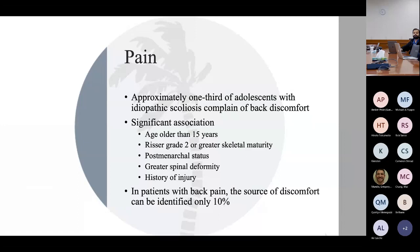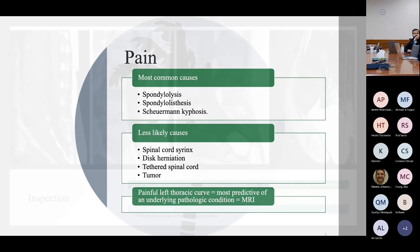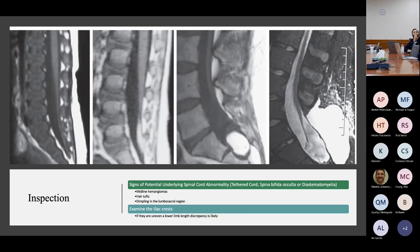Regarding clinical features and physical exam: one-third of adolescents with scoliosis complain of back pain. There is significant association with older age, greater maturity, post-menarchal status, and greater spinal deformity, but only 10% of these patients have an identifiable source. Importantly, if a patient has a left thoracic curve and it is painful, that is the most predictive finding of an underlying pathological condition, and an MRI is definitely indicated — as it can reveal syrinx, tethered cord, and other pathologies.